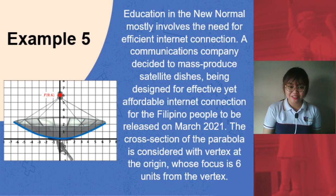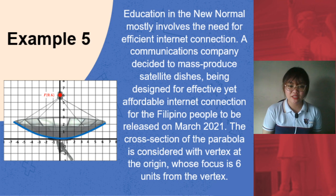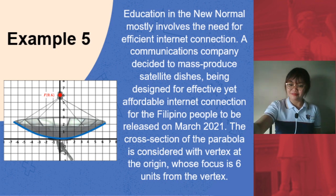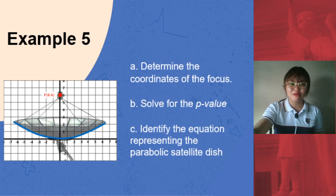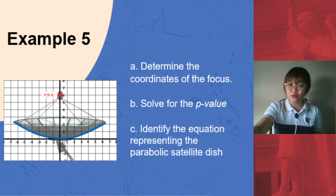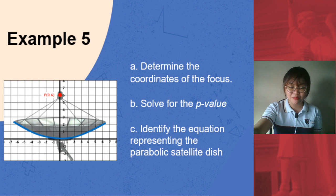The cross-section of the parabola is considered with vertex at the origin, whose focus is 6 units from the vertex. From this, determine the coordinates of the focus, solve for the p-value, and identify the equation representing the parabolic satellite dish.